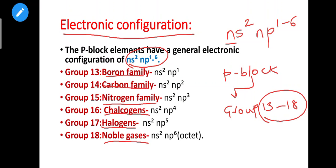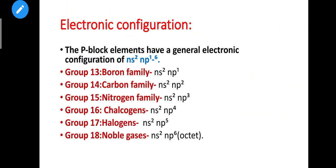Let's look at the general electronic configurations. For Group 13 (ns2 np1), the first element is boron, atomic number 5: 1s2 2s2 2p1, so the valence configuration is 2s2 2p1. Carbon is 2s2 2p2 giving np2. Going across: np3, np4, np5. Noble gases have the configuration ns2 np6.